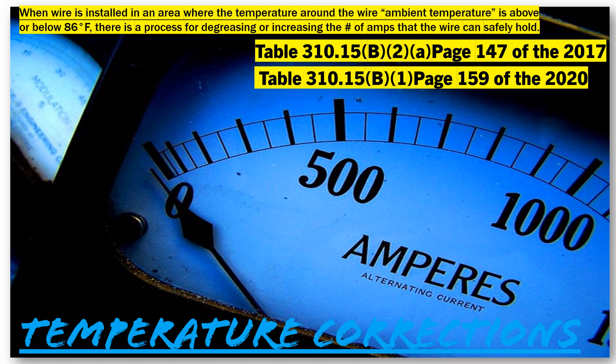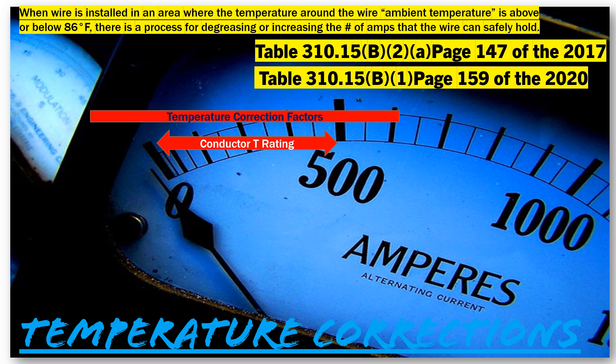Alright, the first thing I want us to do is look at this table and break it down. Whenever we get to a table, the first thing we do is look at the bold heading — we're dealing with temperature correction factors, so we know we're in the right table. The first thing we're going to come to is the conductor temperature rating, and we have a 60, a 75, and a 90.